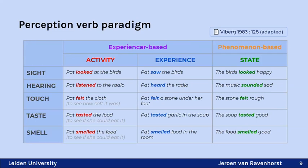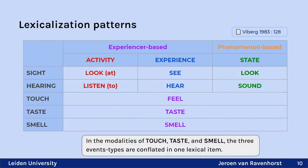Taking these three types — experiencer-based activities, experiences, and phenomenon-based states — we can organize them in a paradigm across five sensory modalities. For sight and hearing, all three event types are distinguished, but for touch, taste, and smell, the same verb expresses all three events — they are conflated in the same lexical item.